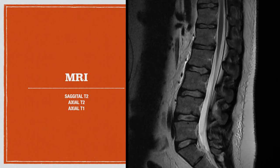Because sagittal T2 is fluid-sensitive, fluid appears bright. The discs are bright because they are normally hydrated. Some of you may have seen MRI reports mentioning disc desiccation — as we get older, the discs lose their fluid content. That's what disc desiccation means: the discs have lost their fluid, and on MRI they appear black instead of bright.